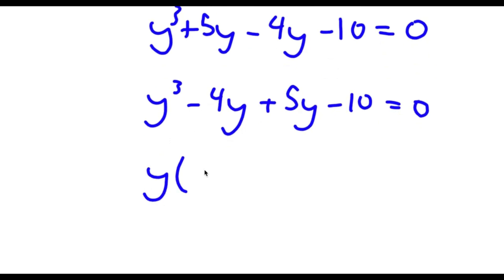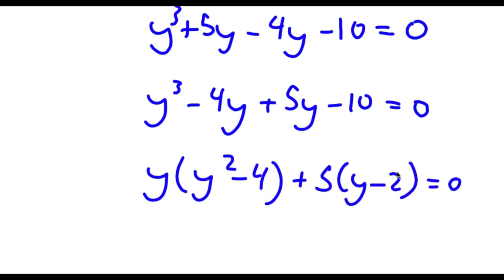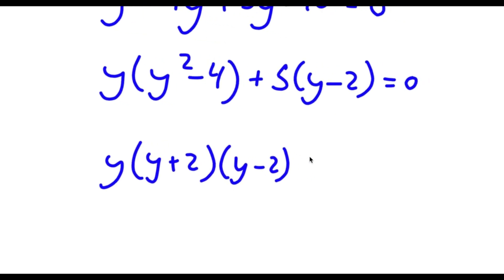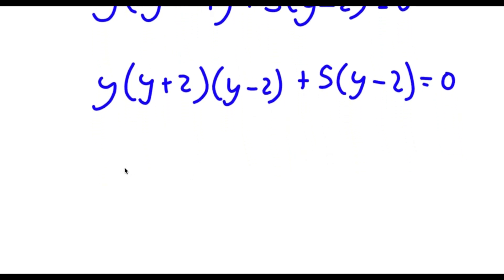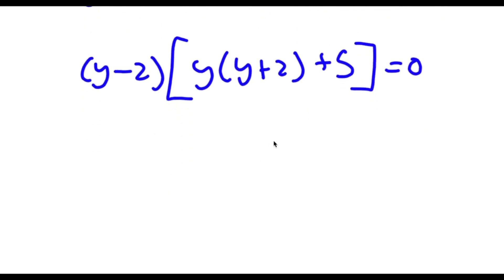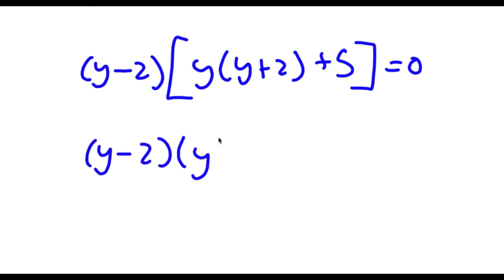So y to the power of 3 minus 4y plus 5y minus 10 is equal to 0. If I factor out y from y to the power of 3 minus 4y I get y times y squared minus 4. And if I factor out 5 from 5y minus 10 I get 5 times y minus 2 is equal to 0. Now y squared minus 4 is the same thing as y plus 2 times y minus 2. So factoring out y minus 2 from this, I get y minus 2 times y times y plus 2 plus 5, which gives y minus 2 times y squared plus 2y plus 5 is equal to 0.